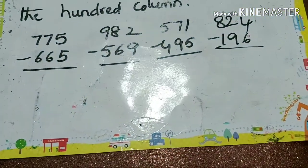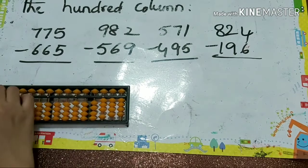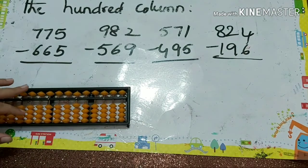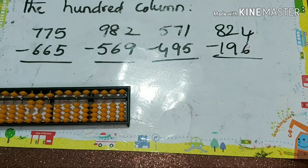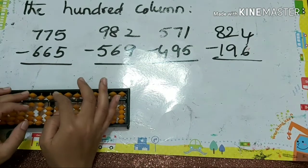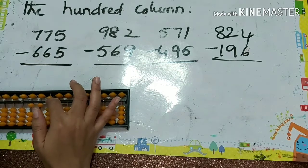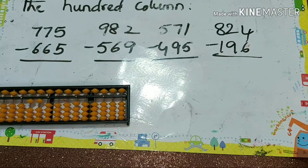Next one: 775 minus 665. How to do minus 6? Direct. Next, also direct. Next minus 5, also direct method. Answer is 110.